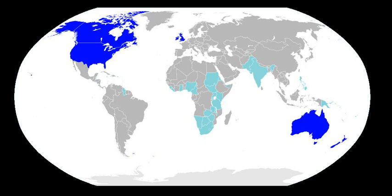Middle English began in the late 11th century with the Norman conquest of England and was a period in which the language was influenced by French. Early Modern English began in the late 15th century with the introduction of the printing press to London, the printing of the King James Bible, and the start of the Great Vowel Shift.